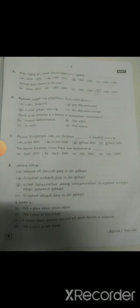Fifth one: Handle plans formed in the year, Option D, 1992-1992. Sixth one: Which of the following is a feature of monopoly competition? Option A, product differentiation.